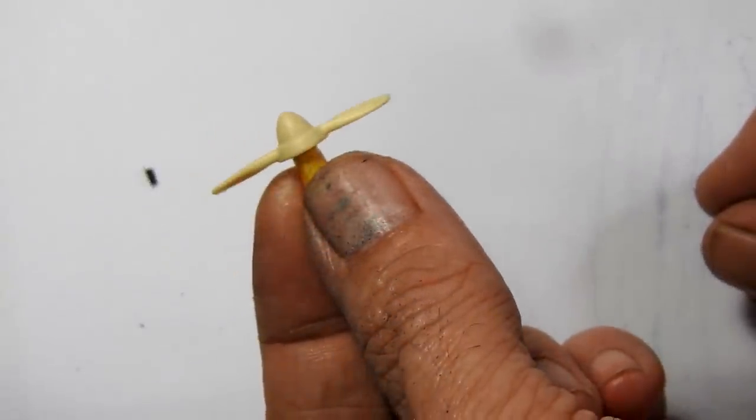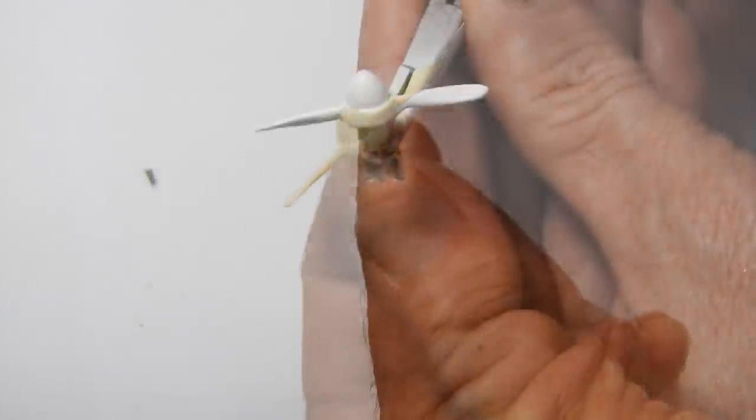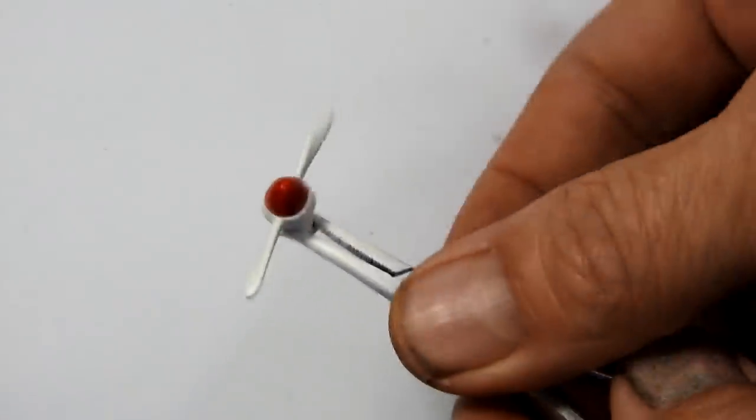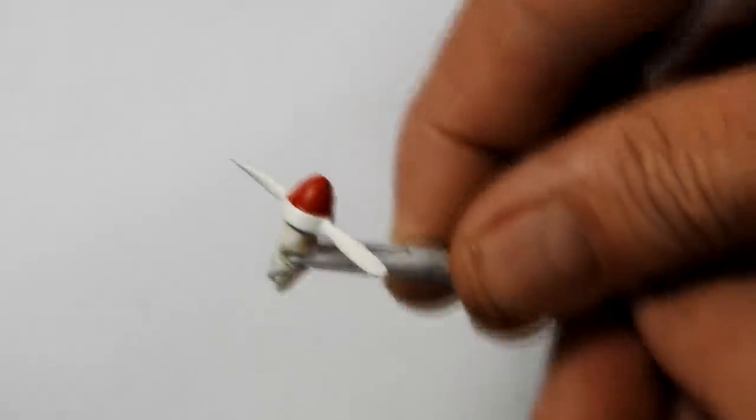And finally there was the prop for the plane. I painted that white. And I just detailed the cone on the front in red.